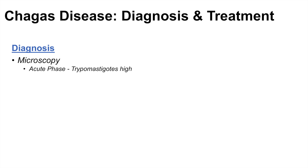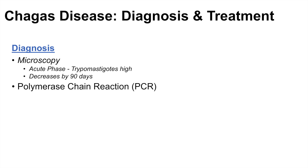Diagnosis of Chagas disease can occur through microscopy, which is most useful in the acute phase when trypomastigotes are high — though they decrease significantly by 90 days, making microscopy less effective later on. Diagnosis can also occur through polymerase chain reaction (PCR), which is also most helpful during the acute phase. Hemoculture — culturing the blood of a patient — can also aid in diagnosis.